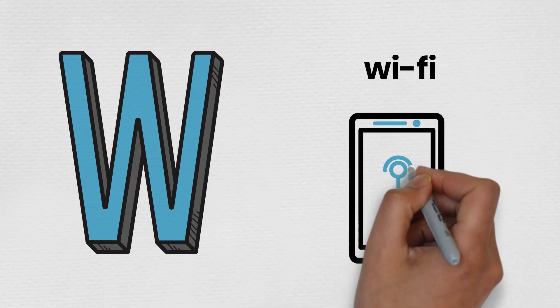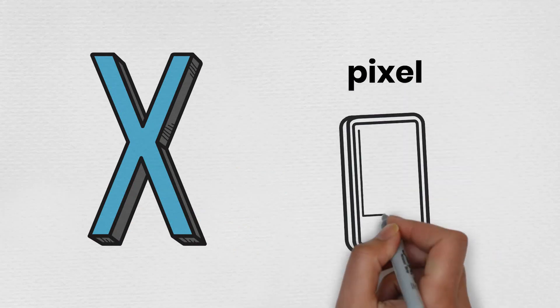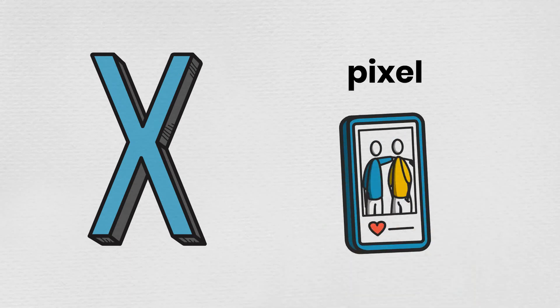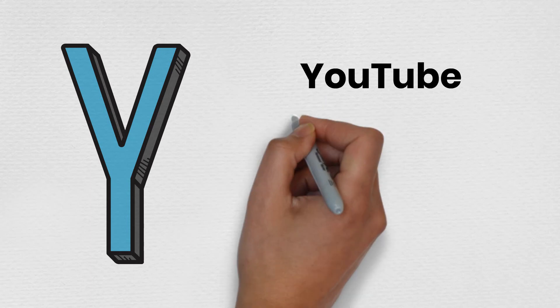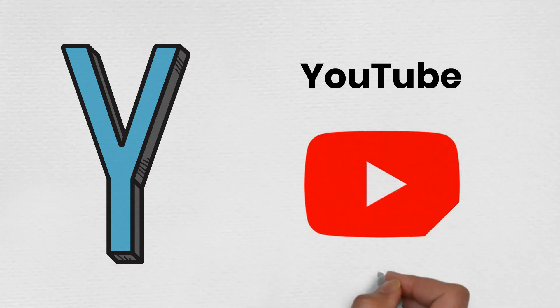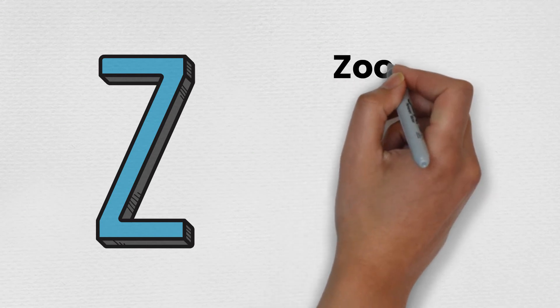W is for wifi. X is for Pixel. Y is for YouTube. Z is for Zoom.